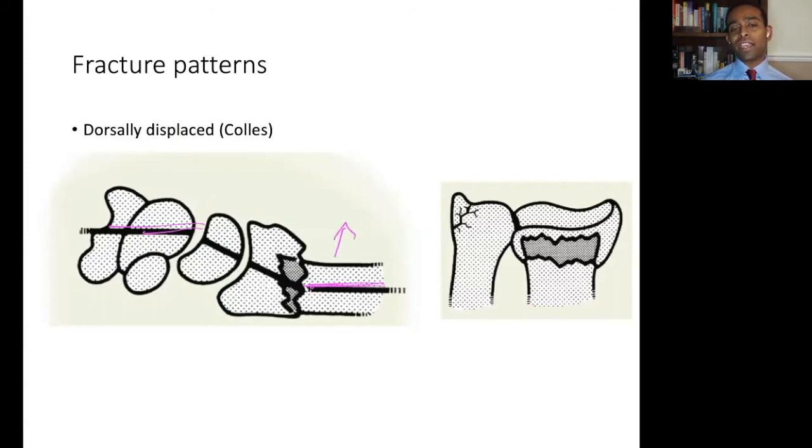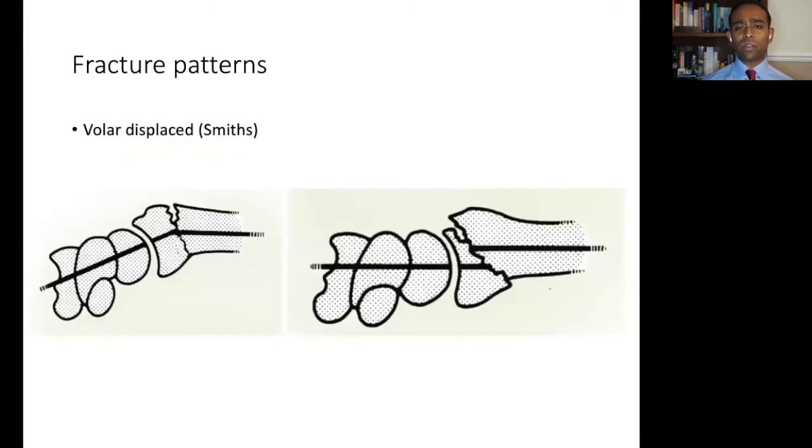For volar displaced fractures, often termed Smith fractures, there is significant instability. This time, when the mechanical axis of the hand drifts volar, the significant force from the long flexors make ongoing displacement and drift highly likely and difficult to control with non-operative management, thus risking a mechanically compromised hand and wrist.